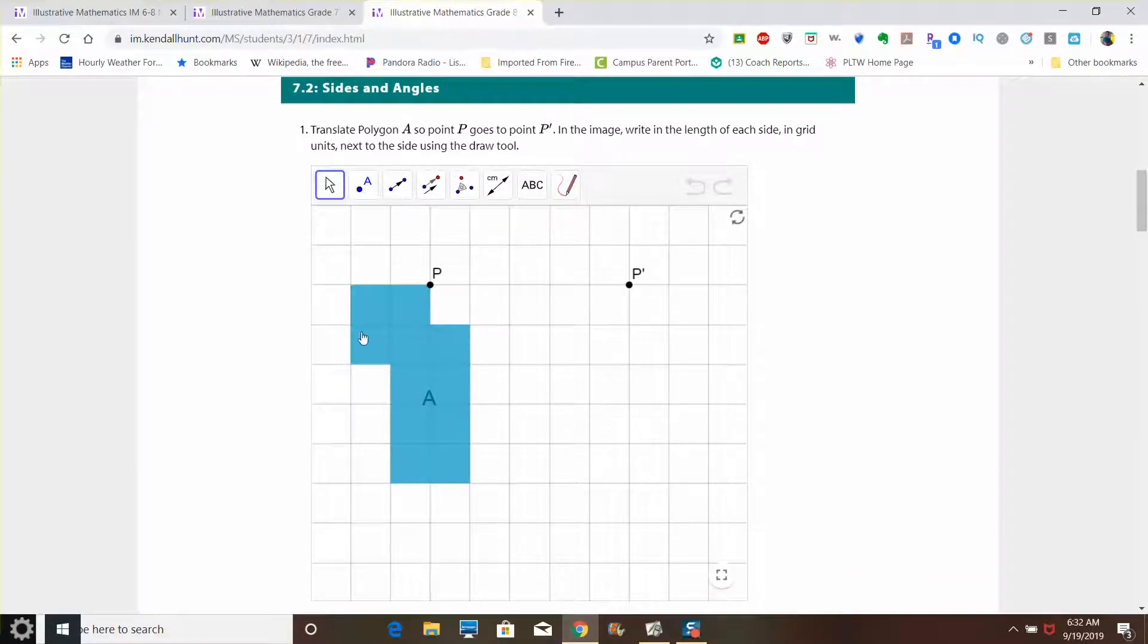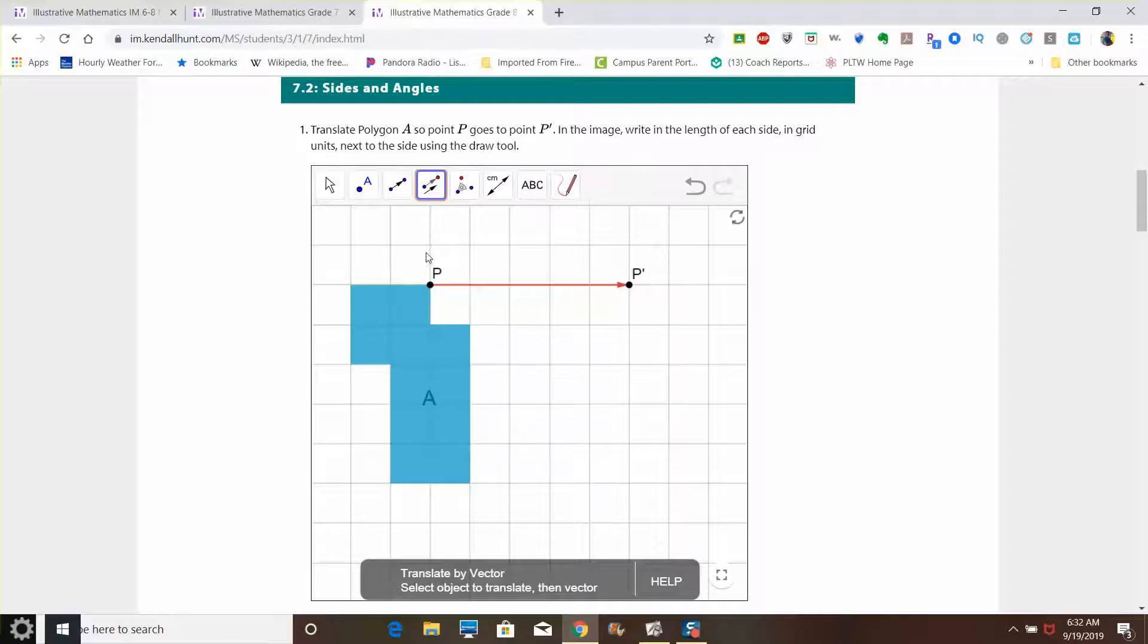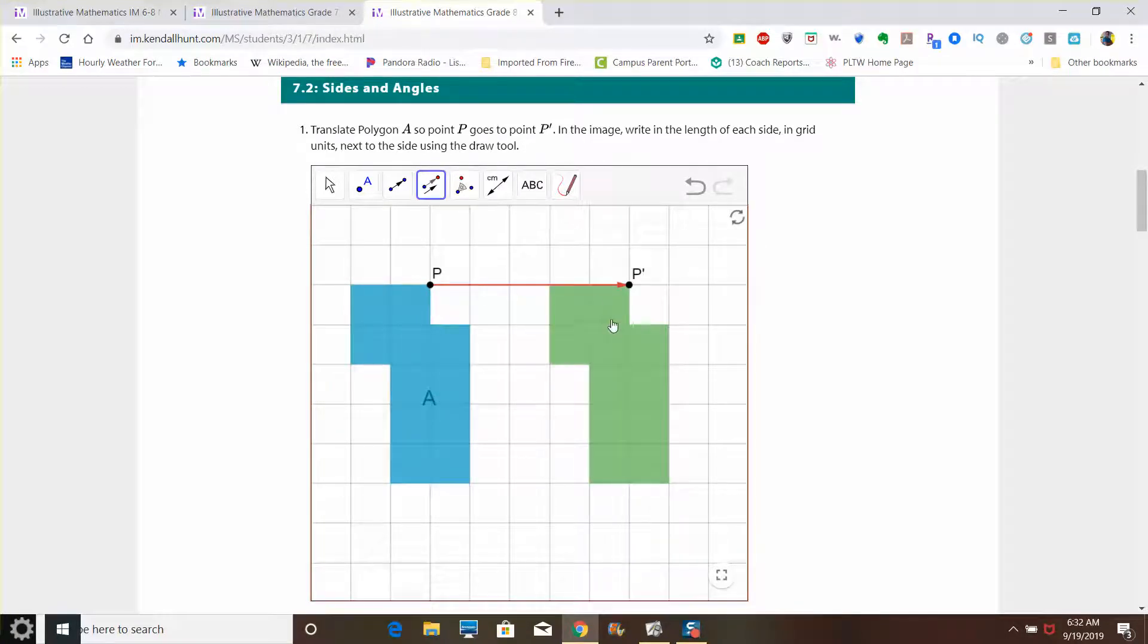So what we have to do here is we have to translate polygon A so it goes to point P prime, and then in the image we need to write the length of each side in grid units next to the side using the draw tool. We're going to translate this figure, and we're going to translate it to this point. So we add this vector, use the vector tool. Then we use the translate by vector tool, select the object, select the vector, and then we get an image.